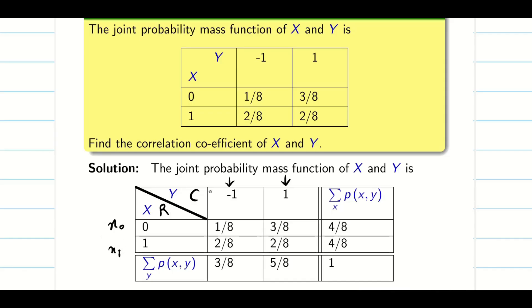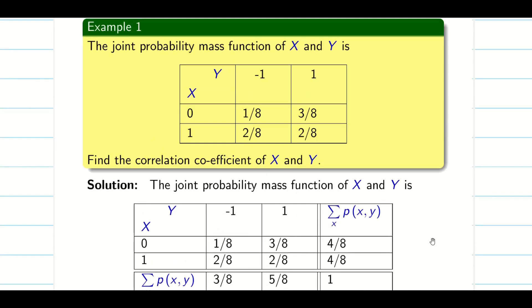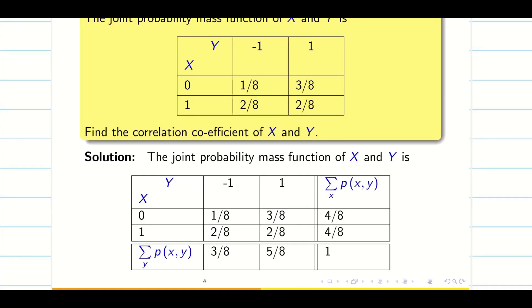That means this is X0, X1 values. Similarly, you can think this as Y0 and Y1 values. Whatever data is given on the top represents the column. Y represents the column here and X represents the rows.